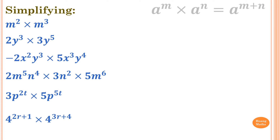Please stop the video and do this one yourself. So m squared times m power of 3: both are the same base, so we just add the indices. 2 plus 3 is 5, so m to the power of 5.